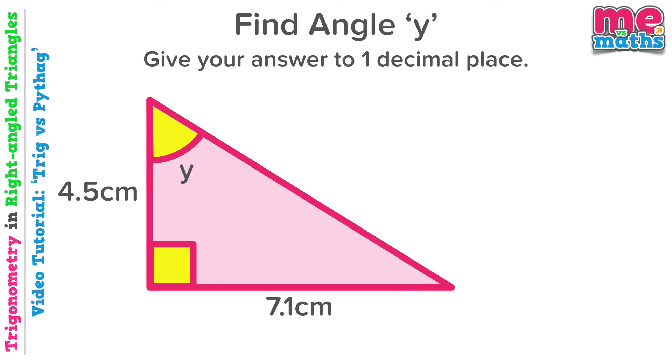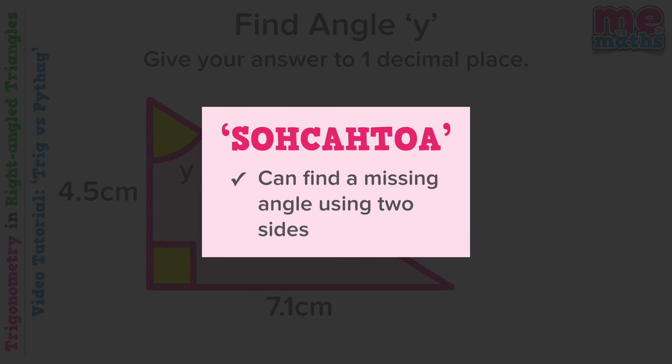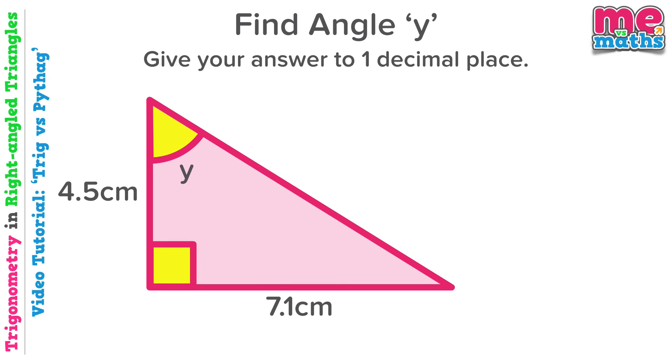Our next question asks us to find a missing angle. Pythagoras does not really use angles at all, so this must be a job for SOHCAHTOA. That allows us to find a missing angle using two sides, which is exactly the information we've got in this question. We're using the opposite and the adjacent, so tan is the function that we want to use.